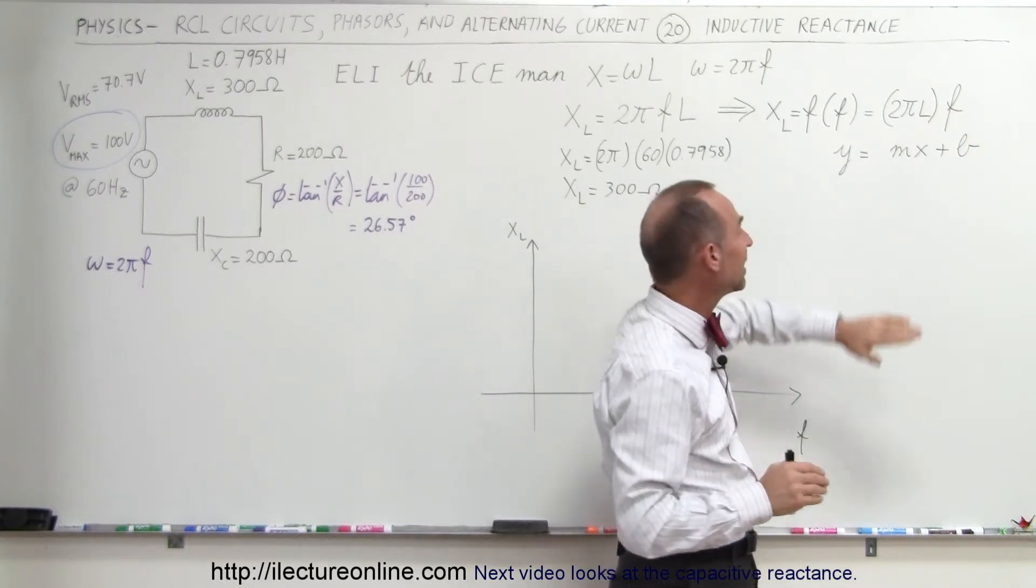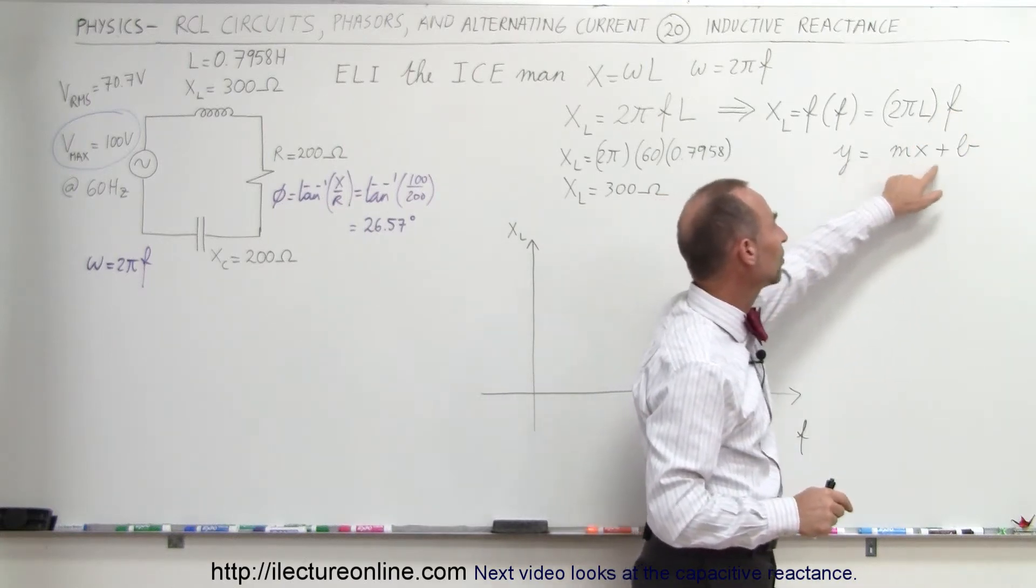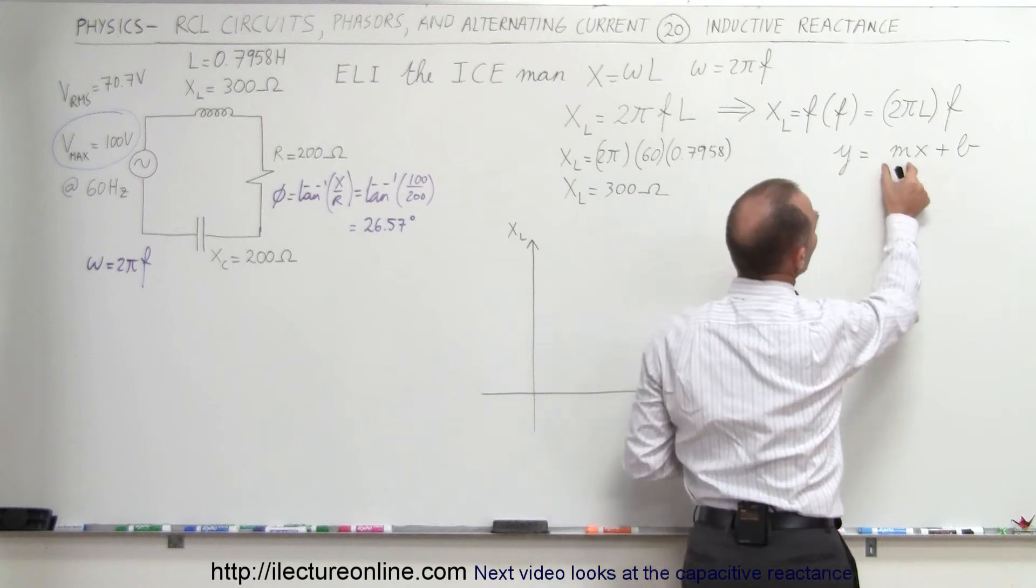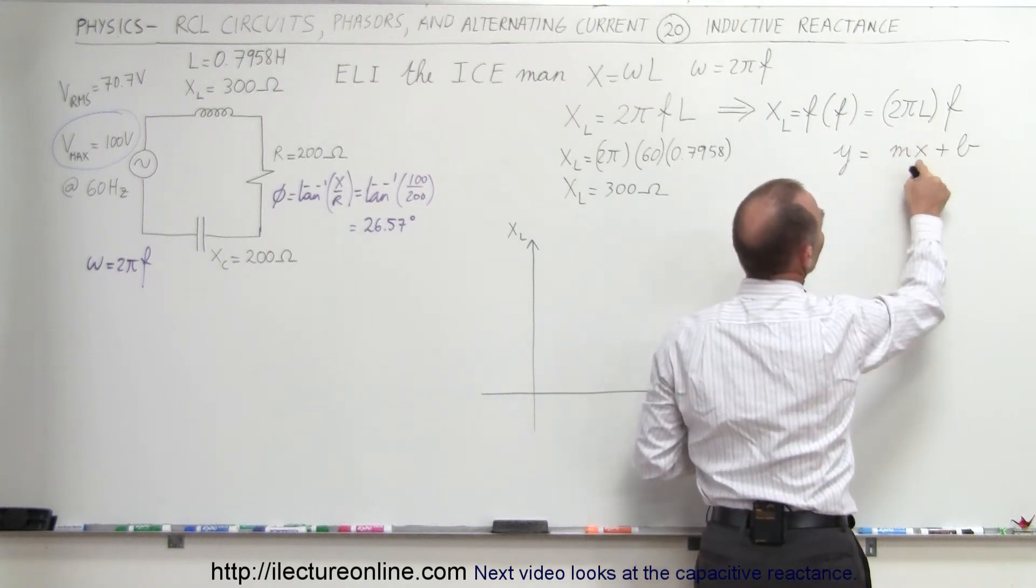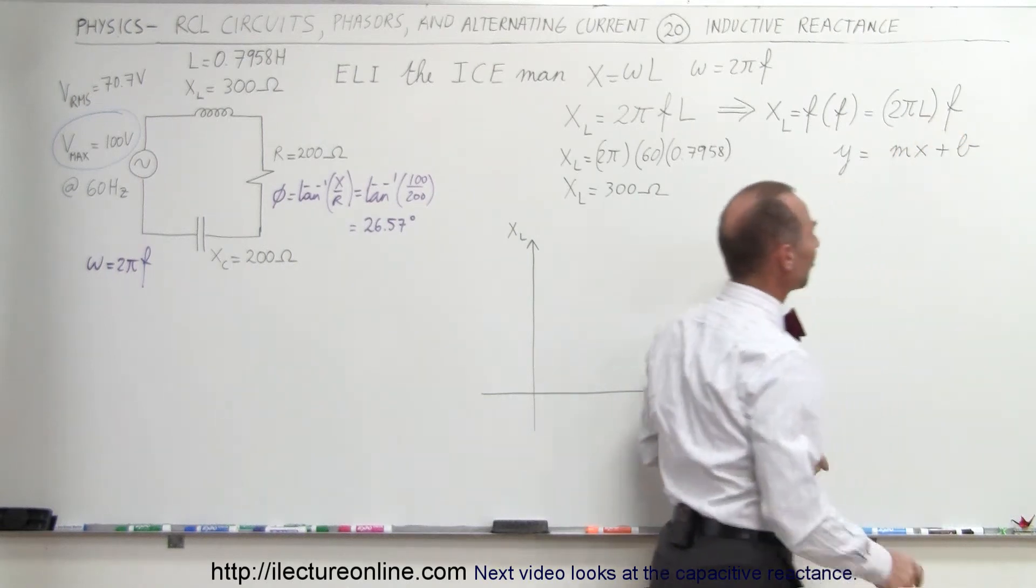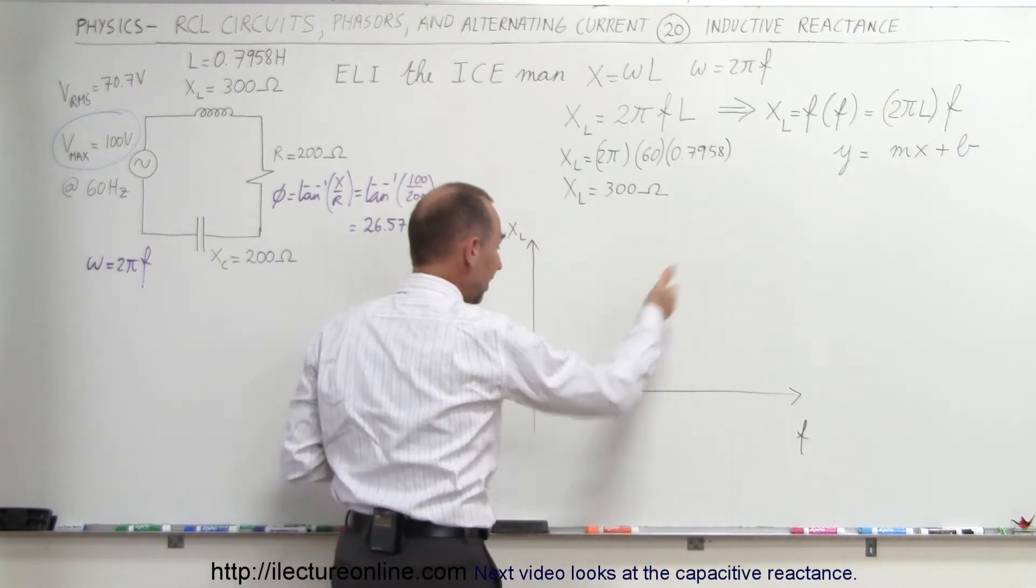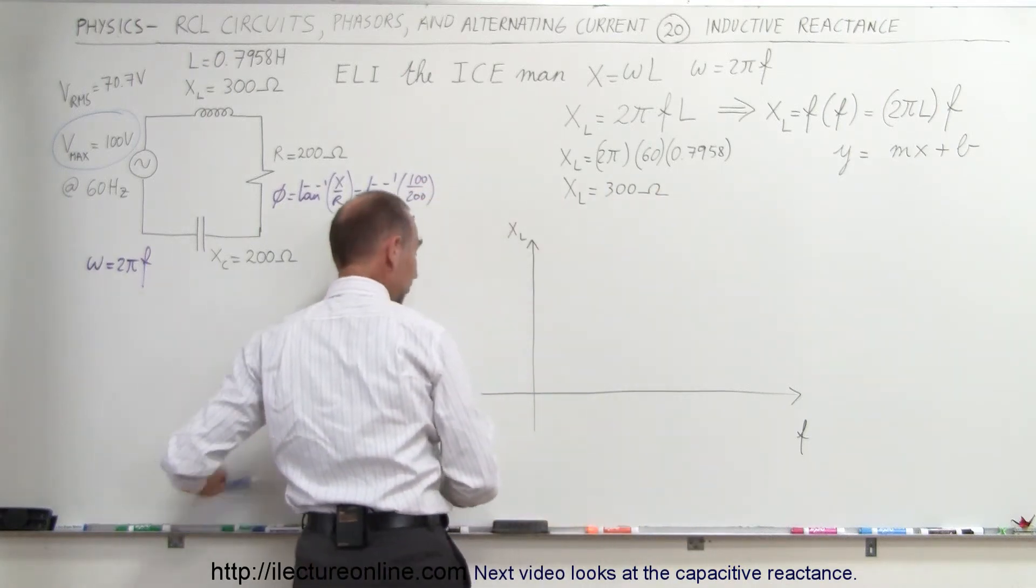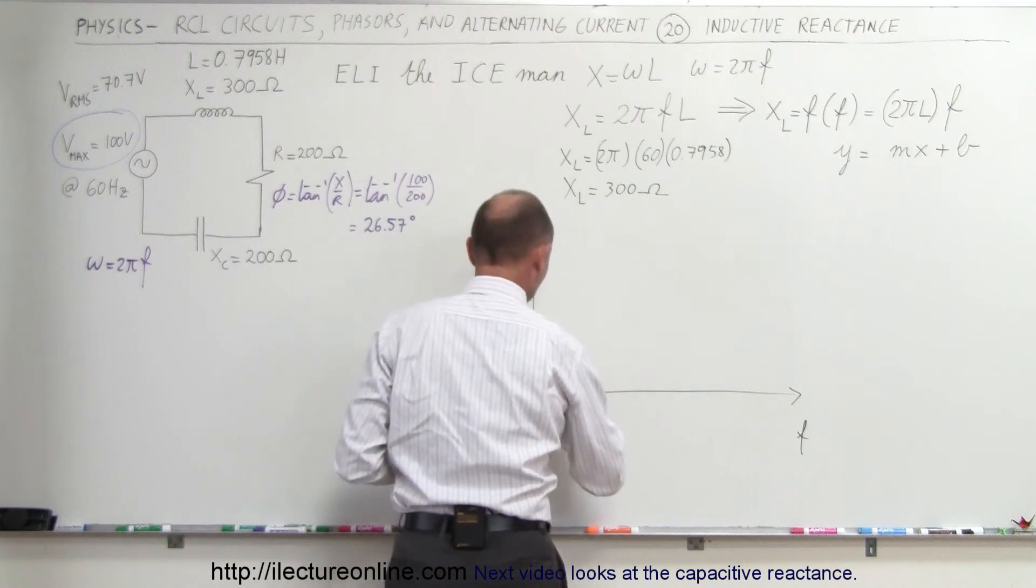And notice that looks a lot like the linear equation y equals mx plus b. M here is the slope, that would be 2πL. X is the variable, in this case it's F. So it's a straight-line function. To graph that on the line right here, let me use a different color, it looks like this.